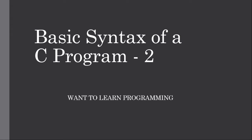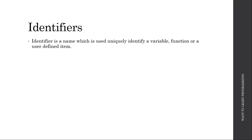Identifier is a name which is used to uniquely identify a variable, a function, or a user-defined item. An identifier can start with a letter from A to Z (capital or small) or an underscore, and it can be followed by more letters, underscores, or even digits.